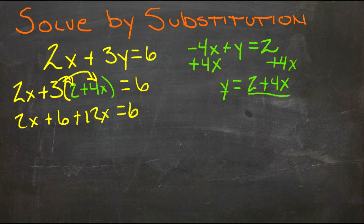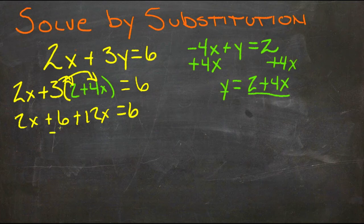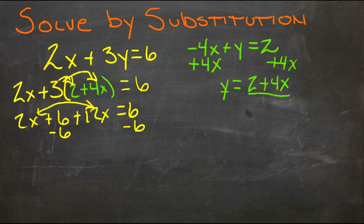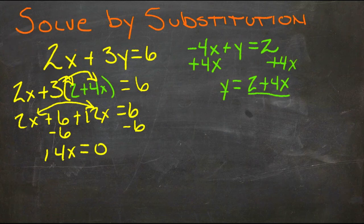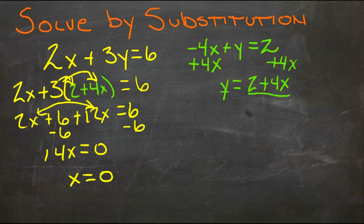We'll combine our like terms and subtract 6 from both sides, combine these two, that gives us 14x equals 0. If 14x is 0, then divide everything by 14, x is also 0.